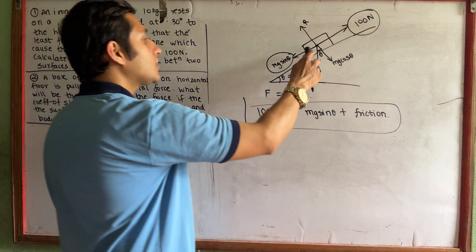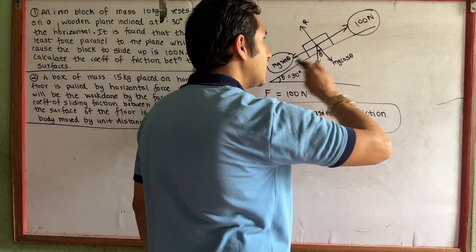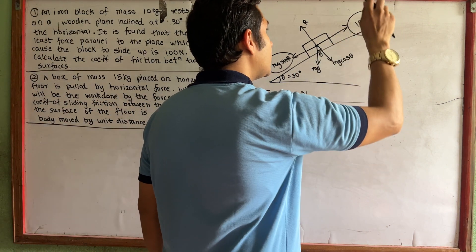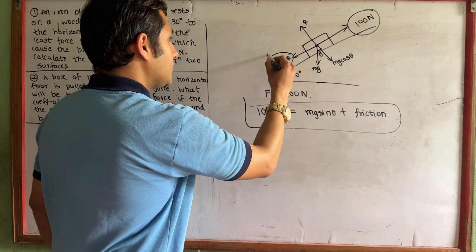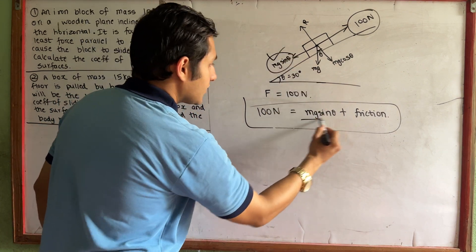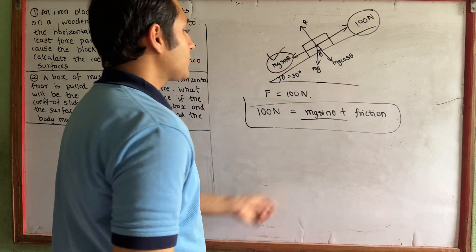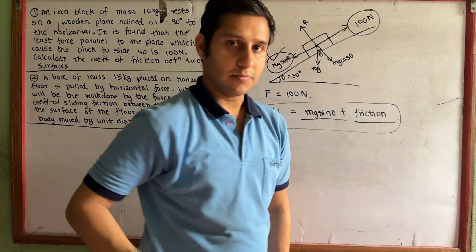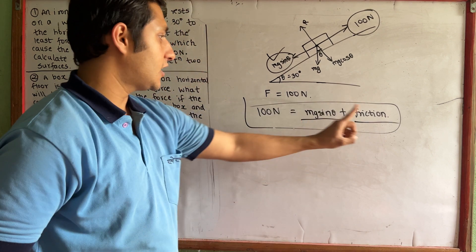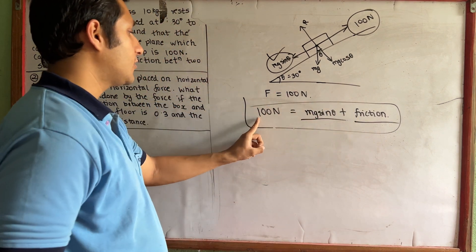If we need 100 N, that is what we need to do right now. F equals Mg sin theta plus friction — it's all together.